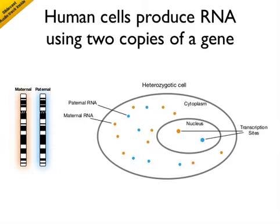The human genome comes in two copies, one from each parent. When the DNA of a gene needs to be transcribed, there is a choice made between the maternal or paternal copy. In this cartoon, we show a cell that is heterozygous for a given gene, and when a gene is transcribed in the nucleus, we see the nascent RNA collecting in the nucleus and then exported to the cytoplasm to be translated into protein. So at any given time, the cell has a mixture of the RNA from the maternal or paternal copies of that gene.